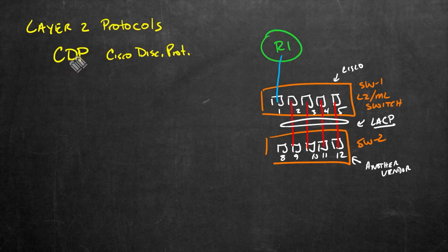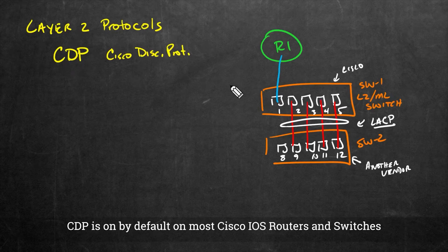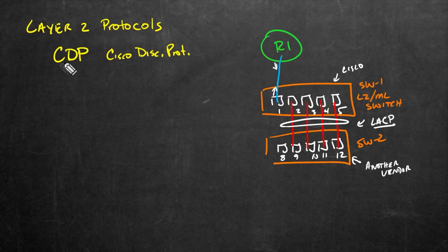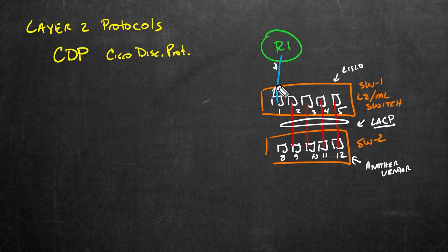So behind the scenes, CDP Cisco Discovery Protocol is running by default. And it's sending little messages out periodically. So the router would be sending them out and the switch here would be sending them out. And that way, these two devices can dynamically with this layer two protocol called Cisco Discovery Protocol, identify what's on the other side.